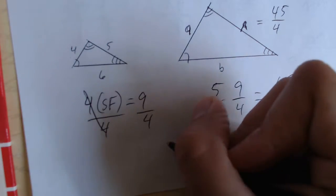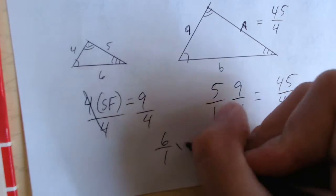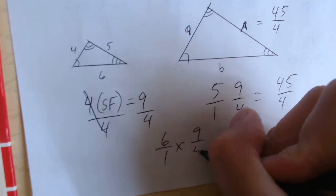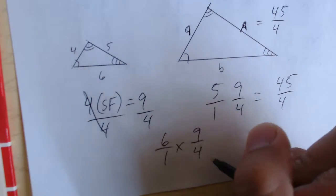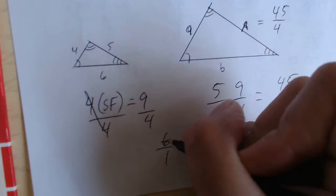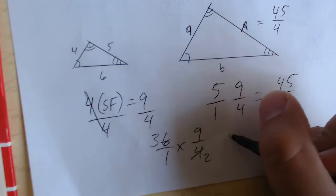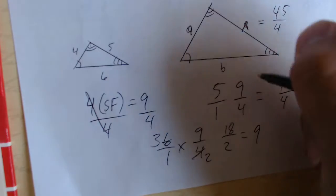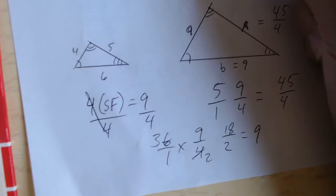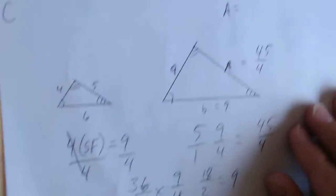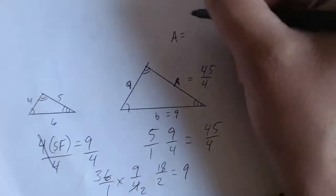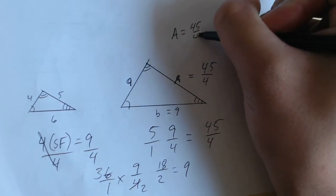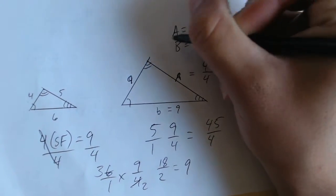And then for B, we'll do the same thing. Take 6 over 1 times 9 over 4. These can actually cross cancel. That would become 2. That would become 3. 3 times 9 is 18. 18 over 2 reduces to 9. So, then B equals 9. So, A is equal to 45 over 4, and B is equal to 9.